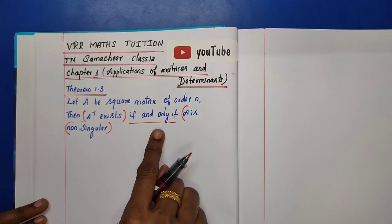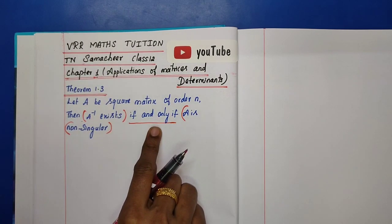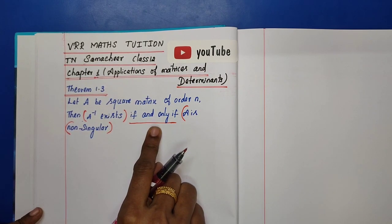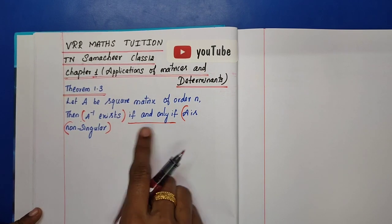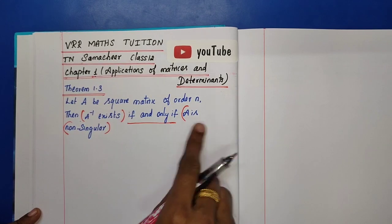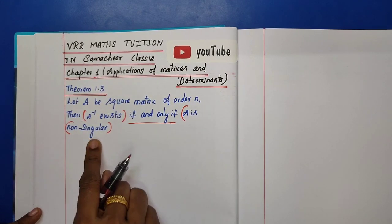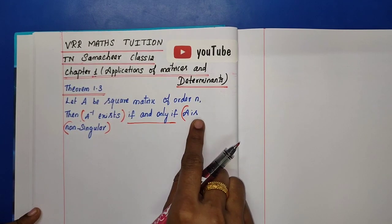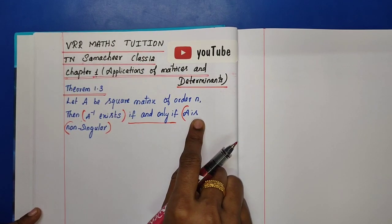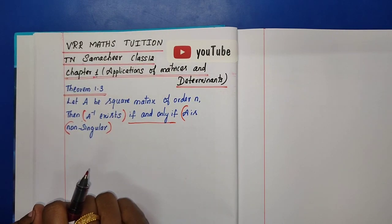In the 'if and only if' meaning, we will prove two parts. In the first part, A inverse exists is given, and A is non-singular is the proof. In the second part, A is non-singular is given, and A inverse exists is the result.